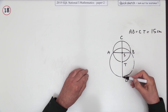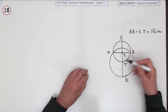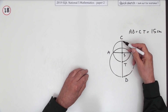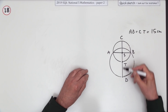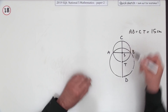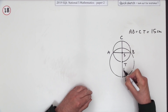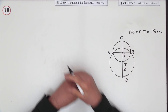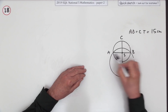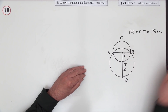The overall height will be the radius of the large circle plus the diameter of the small circle. So it's really just about finding the radius of the larger circle — and it must be something to do with the chord, since it's a chord question.